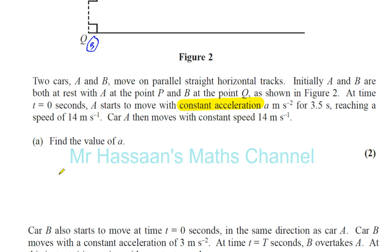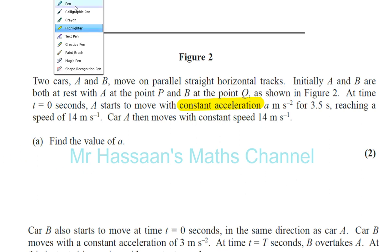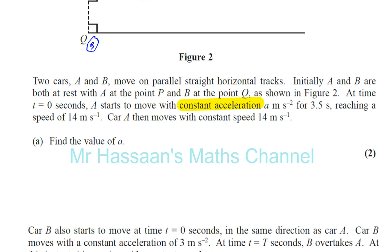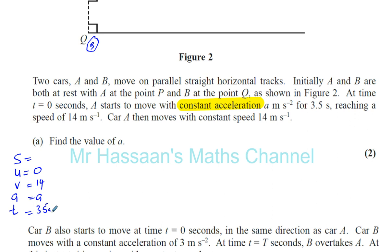So for A, let's just do SUVAT straight away. We've got S — we don't know. For A, it starts at rest, so U is 0. It reaches a speed of 14 meters per second, so V is 14. A is what we have to find, and the time is 3.5 seconds. We don't know what S is; we have to find A. So we can use V equals U plus AT.